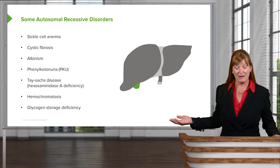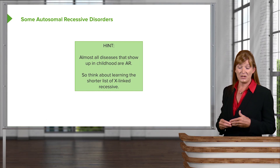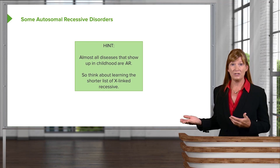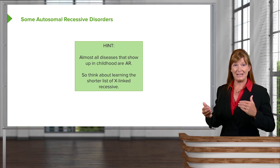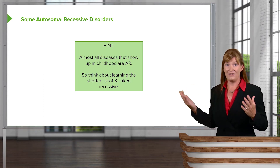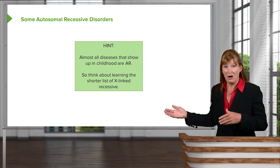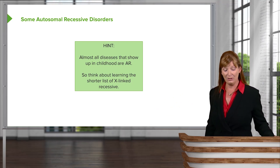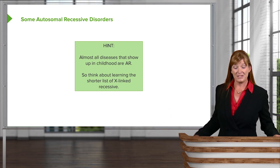Keep these disorders in mind because they are important to know. A helpful hint: almost all diseases that make an appearance during childhood will be autosomal recessive disorders. It's easier to remember this fairly short list of autosomal recessive disorders than all other disorders. If you can keep those in mind, and you encounter a question about a disorder not on your autosomal recessive list, you can guess it as an autosomal dominant or perhaps an X-linked type of disorder.